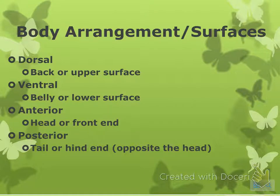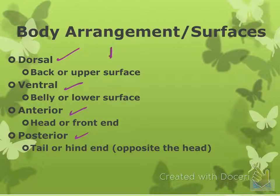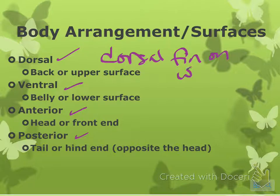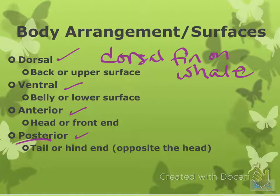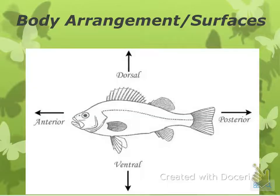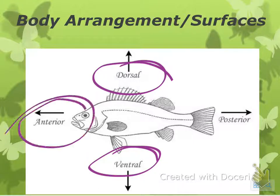So body arrangements and surfaces — this can be easy to confuse. You have four terms: dorsal, ventral, anterior, posterior. Dorsal — when you hear the word, most people think of a dorsal fin, which is on the back. So dorsal is the back or upper surface. Ventral is like the belly. Anterior is the head or front. And posterior is the tail or hind end. Think of it this way: 'post' means after, so your hind end is after — your head is the first thing you'd see and your hind end is what you'd see last.